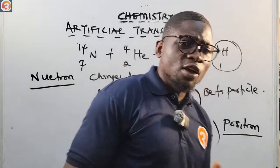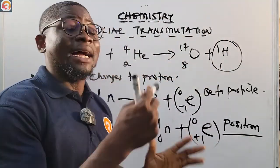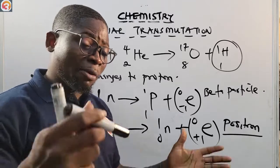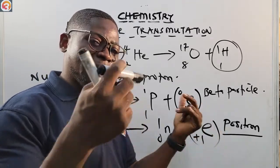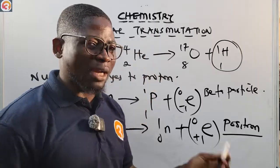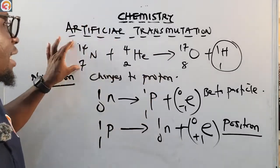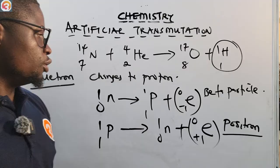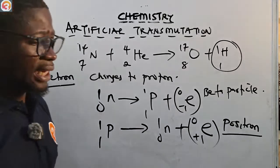To summarize: artificial transmutation is the bombardment of a nucleus by a particle, and the change or transmutation of that nucleus into another nucleus — as seen in the case of nitrogen becoming oxygen.